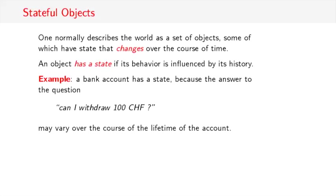So for instance, if I take a bank account as an object, a bank account has state because the answer to the question can I withdraw 100 francs would depend on the previous history of the account. It would say true if I had deposited earlier enough money so that I could withdraw 100 francs, and it would say false otherwise.